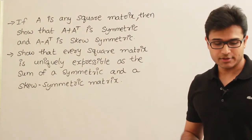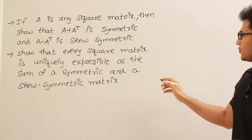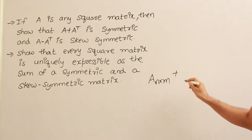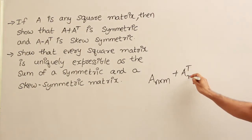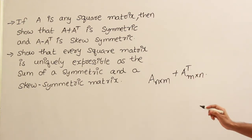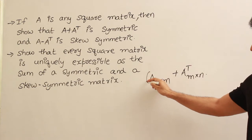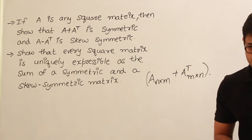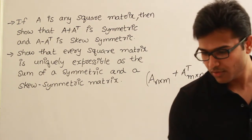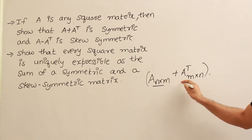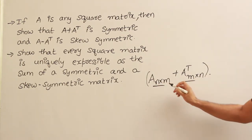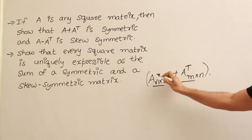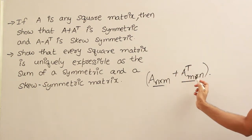Why should A be a square matrix? The reason is: if you have A of size n by m, and you have to add it with A transpose, the size of A transpose will be m by n. You cannot add two matrices unless their sizes are equal — that is conformability for addition. So if we have a rectangular matrix and take its transpose, we cannot add the matrix with the transpose because the sizes are different.